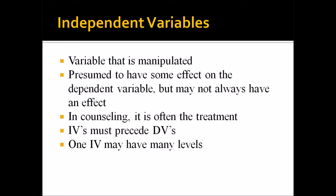In counseling research, the independent variable is often the treatment. For example, say that you had a brief therapy that you believe to be effective in treating depression — that brief therapy used to treat depression would be the independent variable. Independent variables must precede dependent variables, so remember that the independent variable has to occur first.